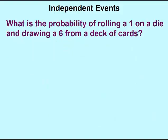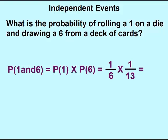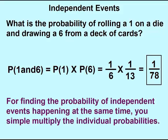Let's apply this to our original probability question: what is the probability of rolling a one on a die and drawing a six from a deck of cards? We simply multiply the probability of rolling a one on a die by the probability of drawing a six from a deck of cards. The probability of getting a one on a die is one out of six. The probability of drawing a six from a deck of cards is four out of 52, which reduces to one thirteenth. One sixth times one thirteenth gives us a probability of one out of 78. Remember: to find the probability of independent events happening at the same time, simply multiply the individual probabilities.